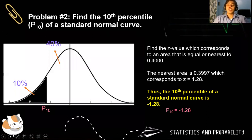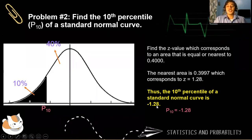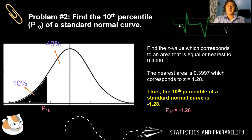Why is the answer negative and not positive? Since the vertical line is located below the mean, the standard score must be negative. Just in case your answer is positive 1.28, the answer will be wrong, because a 10th percentile is located on the negative side of the curve.